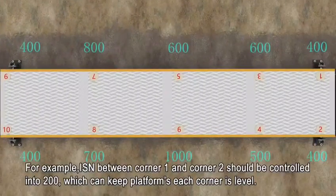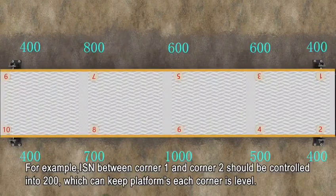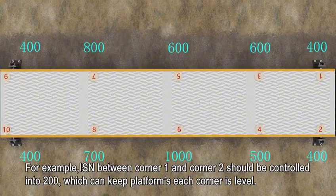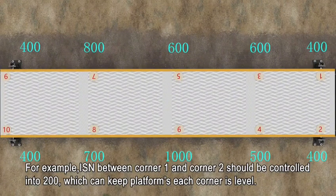For example, ISN between corner 1 and corner 2 should be controlled into 200, which can keep platform's each corner level.